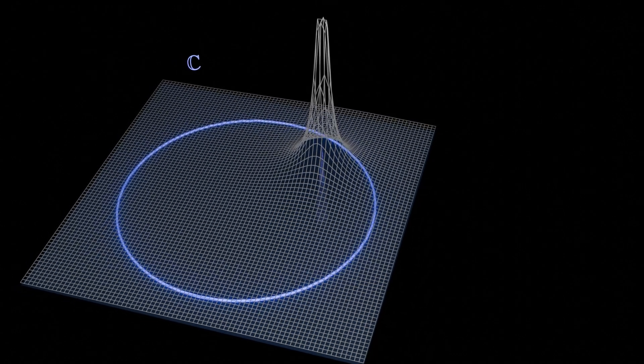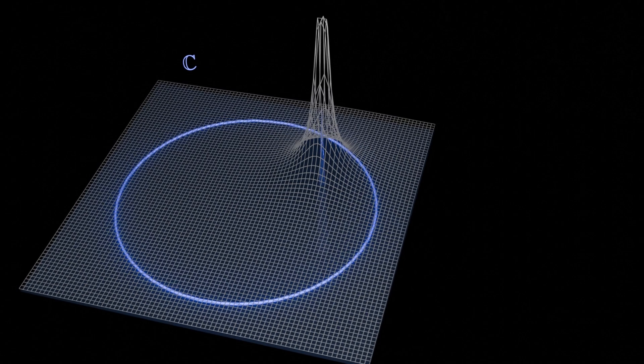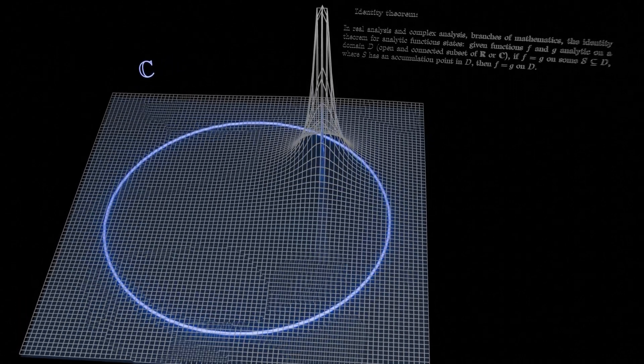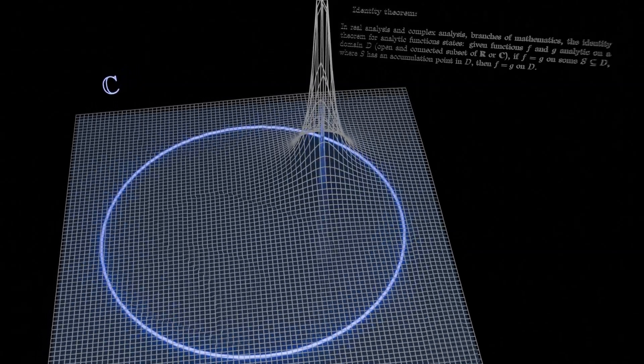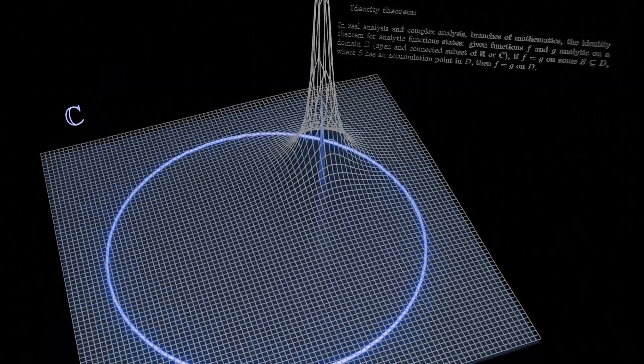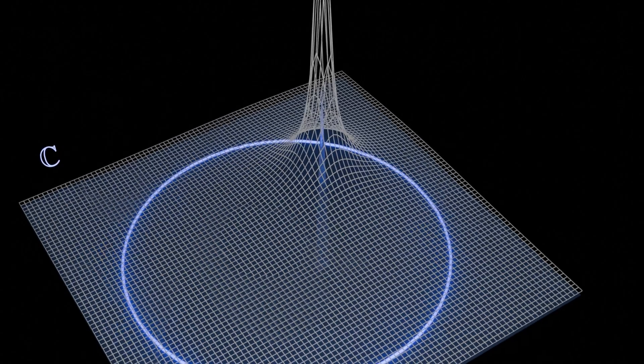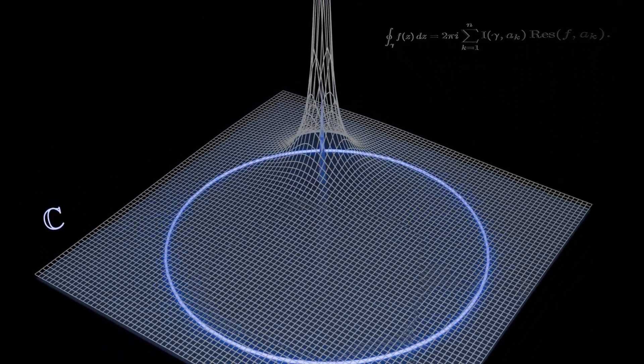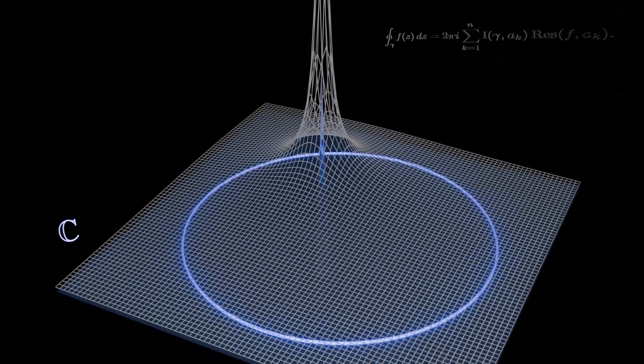For example, just knowing a holomorphic function on a tiny line uniquely determines it on a whole connected region. And what this means is that when you're trying to unwind this data, you've got access to the consequences of this rigidity at your fingertips, like deforming contours and using the residue theorem to just look at the poles, essentially the fingerprint of this encoded data profile.